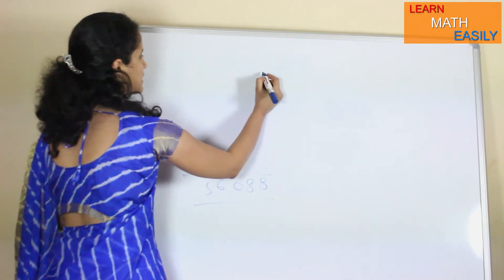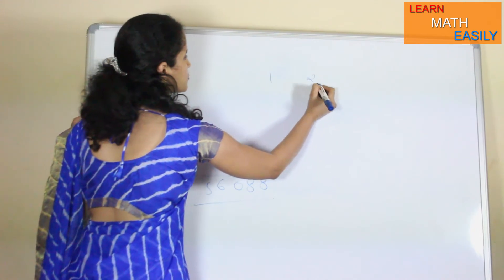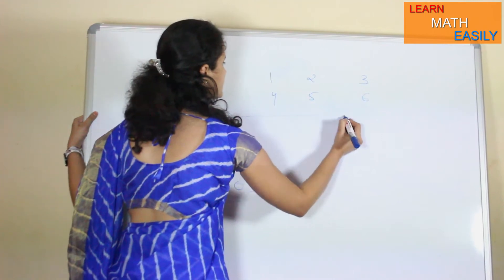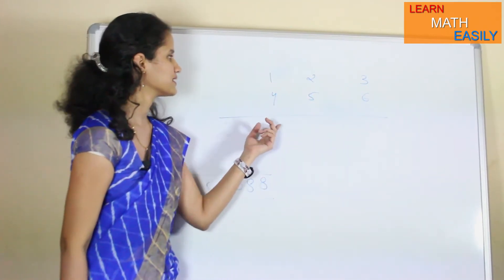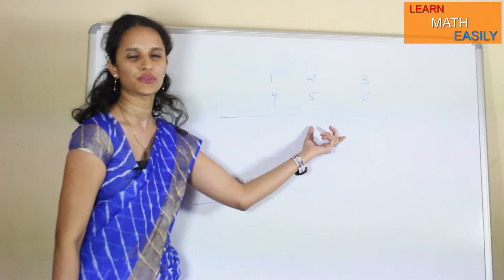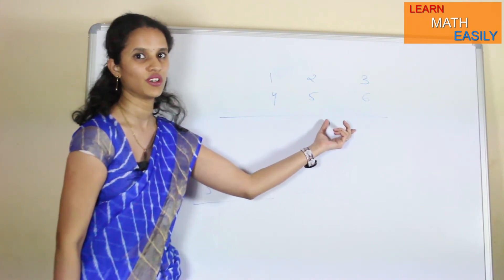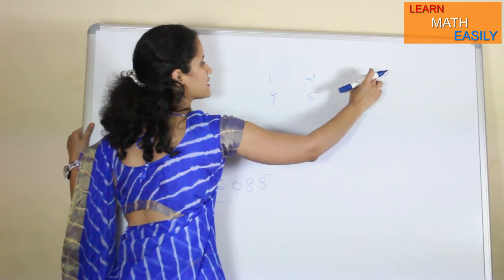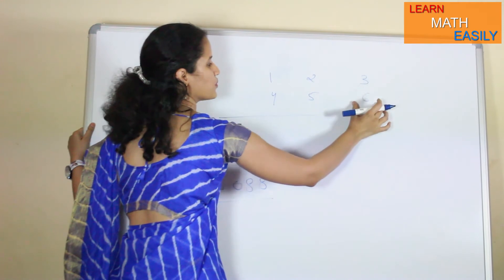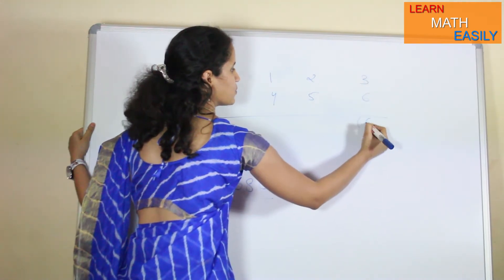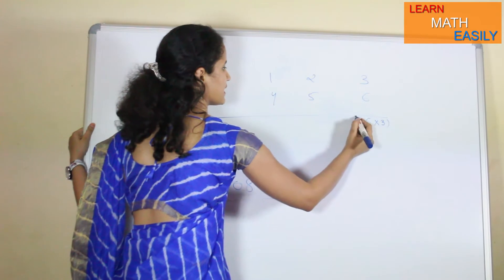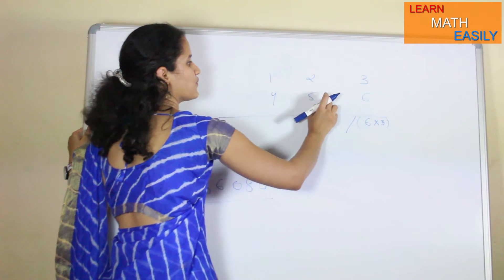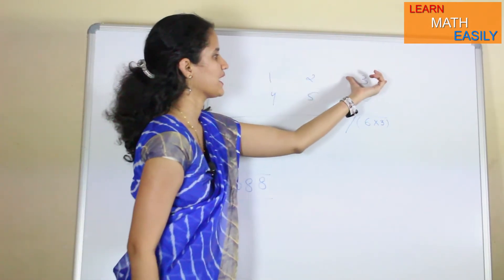I will tell you how you are getting this answer. You write the digits 1, 2, 3 on top and 4, 5, 6 below. According to this method, which is based on the principle of multiplying each and every number with each and every number, first of all we multiply the right-most column: 6 multiplied by 3. In the next step, you cross-multiply: 3 with 5, and 2 with 6.